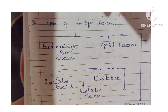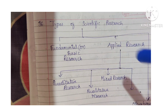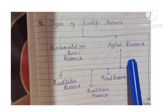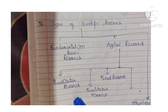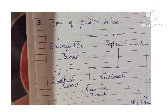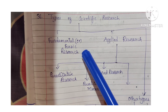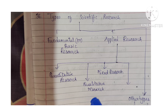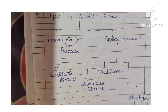Question 36: Types of scientific research. Scientific research is divided into fundamental or basic research and applied research. Applied research includes quantitative research, qualitative research, mixed research, and other types.